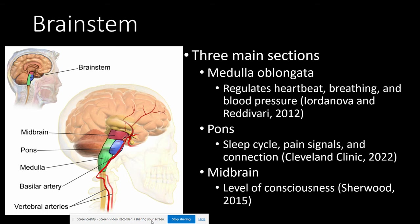The pons is medial to the midbrain and the medulla, and it bulges out slightly — that is the blue section in the picture. It is a merging point for several cranial nerves. The pons influences the sleep cycle, manages pain signals, and connects to other parts of the brain. The midbrain is at the very top, that red section highlighted there. It contains many nuclei and controls heart rate, blood pressure, respiration, and most importantly, level of consciousness.